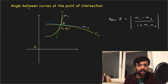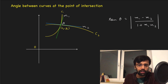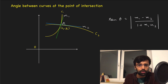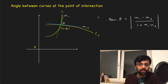Another concept asked is the angle between curves at the point of intersection. If curve C1 and curve C2 intersect at point (x₀, y₀), we remove the derivative of C1 at that point to get slope M1, and the derivative of C2 to get slope M2. Then tan θ = |M1 - M2| / (1 + M1·M2). This will become clear when we solve a question.